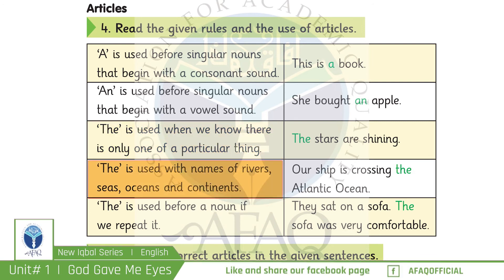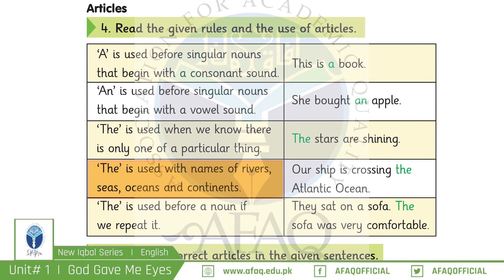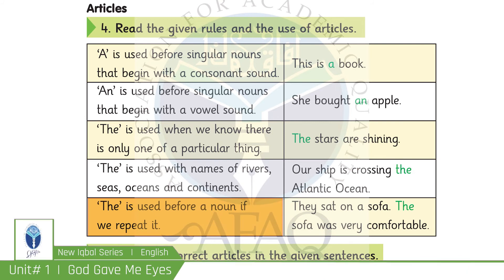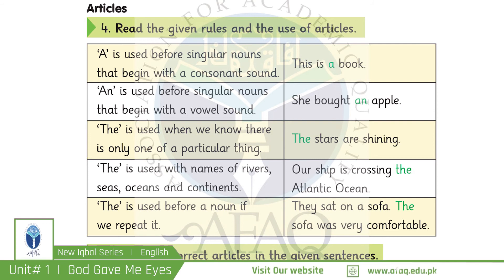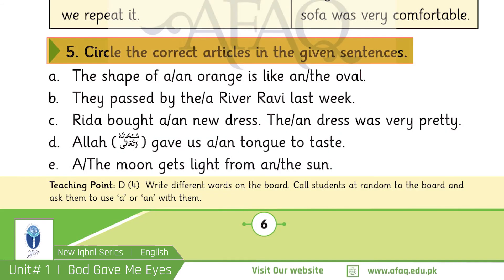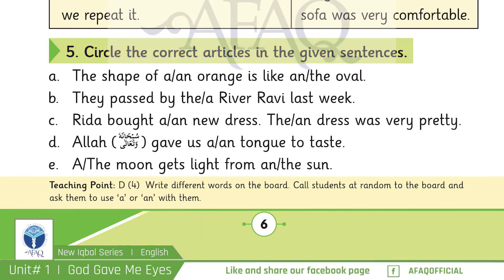'THE' is used with names of rivers, seas, oceans, and continents — یعنی THE دریاؤں، سمندروں، oceans اور continents کے ناموں کے ساتھ استعمال ہوتا ہے۔ 'THE' is also used before a noun if we repeat it — اگر ہم کوئی noun دوبارہ use کریں تو اس کے ساتھ THE use کرتے ہیں۔ Let's practice — circle the correct articles in the given sentence, applying the rules you have just learned.